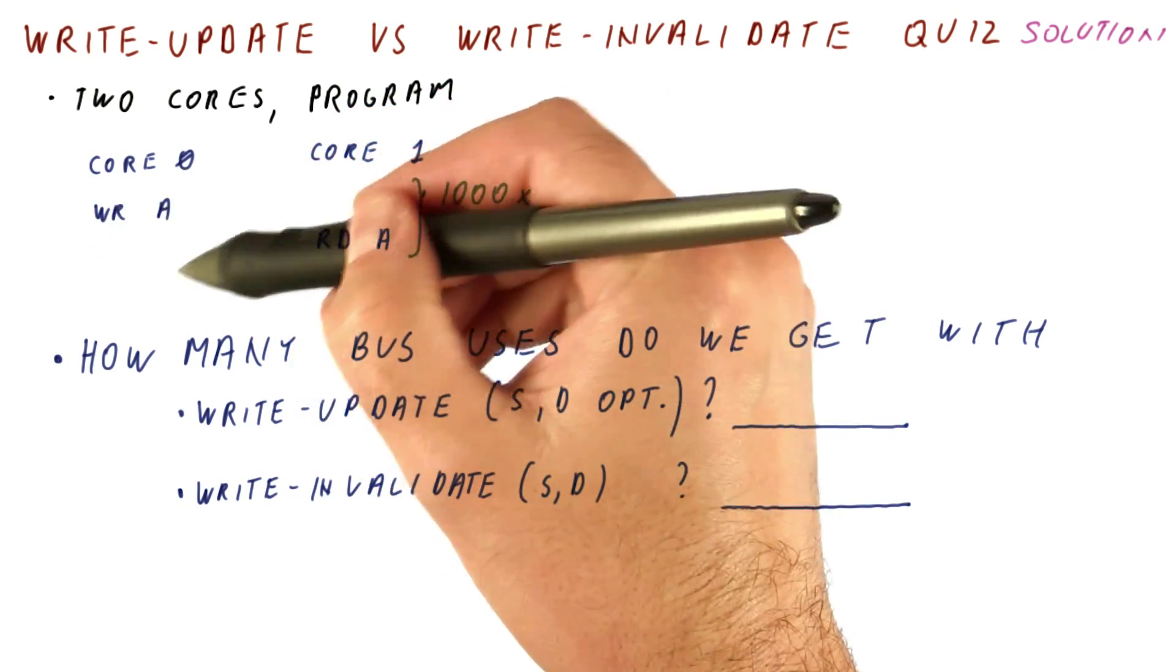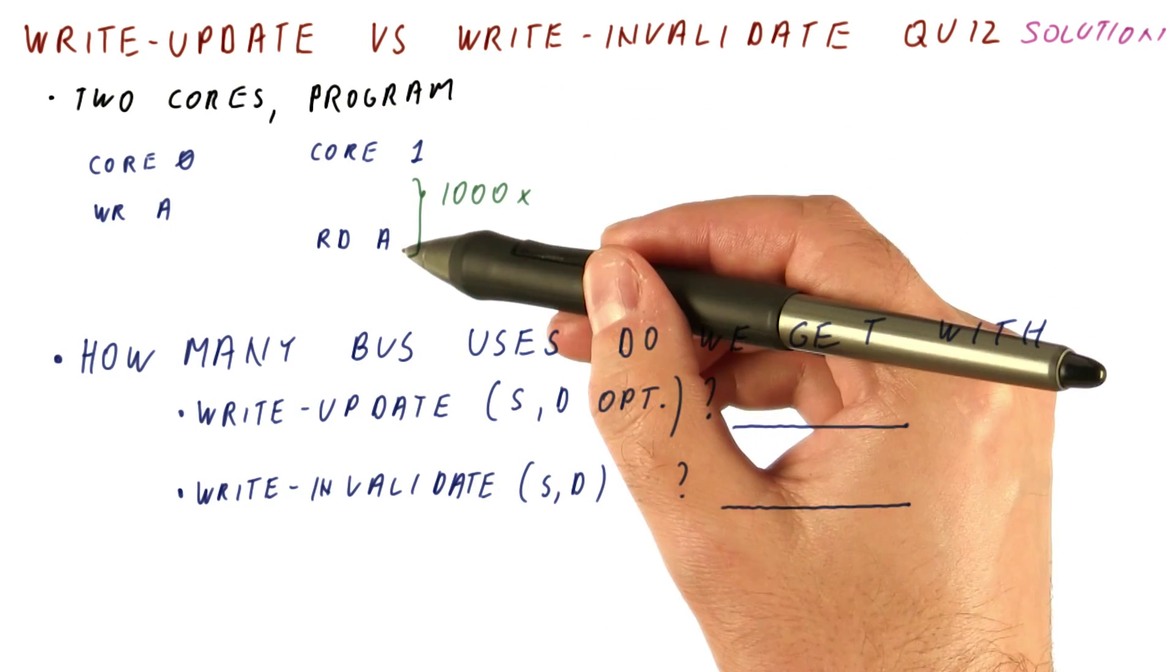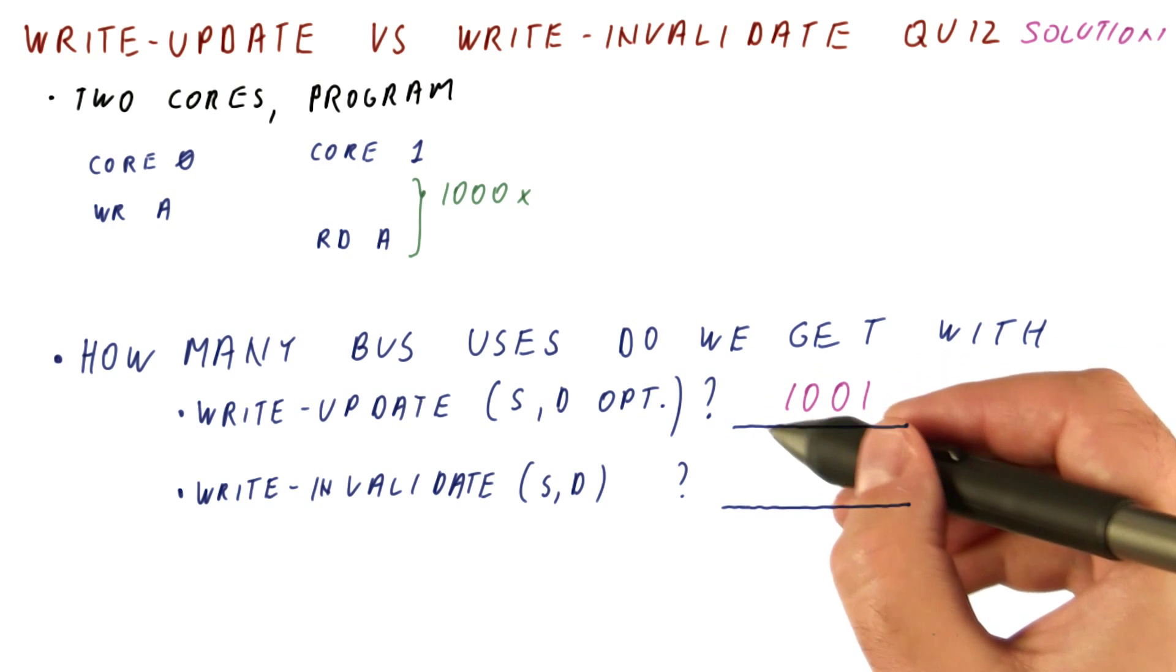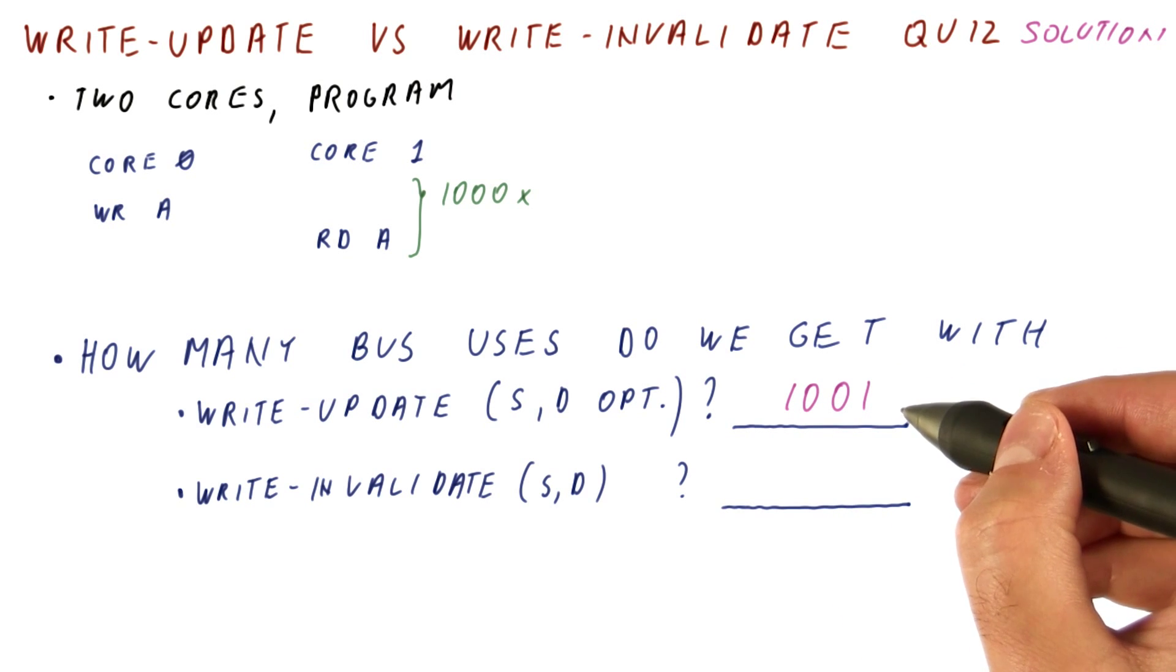So we get 1,000 bus accesses from these writes. And the very first read is going to be a miss, so we get the bus access there. So overall, we get 1,001 bus uses.